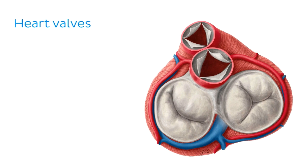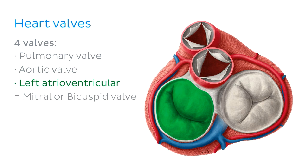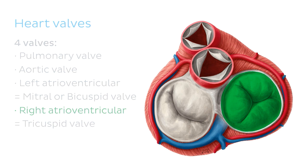There are also four valves associated with the heart, all of which we can see in this image. We're looking at the heart from a superior view, with the right and left atria removed. Anteriorly at the top of the screen is the pulmonary valve, situated between the right ventricle and the base of the pulmonary trunk. Posterior to it is the aortic valve, found between the left ventricle and the ascending aorta. On the left side of the heart is the left atrioventricular valve, also known as the mitral or bicuspid valve, found at the junction between the left atrium and the left ventricle. And on the right is the right atrioventricular valve, also referred to as the tricuspid valve, located between the right atrium and the right ventricle. We'll discuss the heart valves in more detail later on in the tutorial.